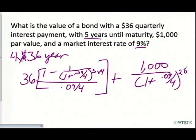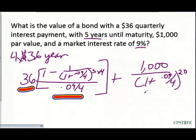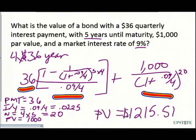An important distinction to make: on the left side, the $36 payment is the amount we're actually receiving — that is the coupon interest payment. The rate embedded in that payment is the coupon rate. The rate on the right side, inside the discount factor, is the market rate. These two rates can be different.